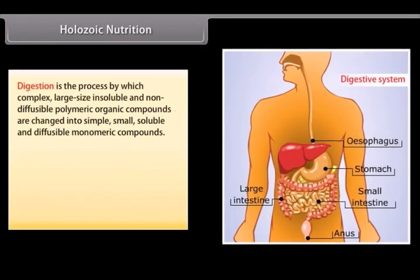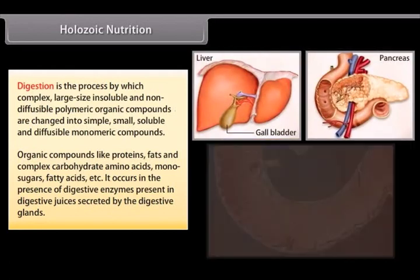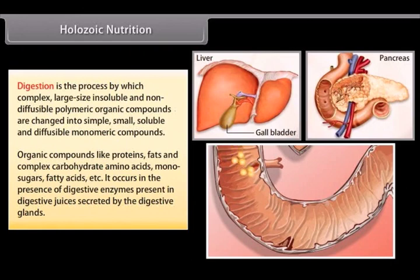Digestion is the process by which complex, large-size, insoluble and non-diffusible polymeric organic compounds are changed into simple, small, soluble and diffusible monomeric compounds. Organic compounds like proteins, fats and complex carbohydrates are broken down into amino acids, monosugars and fatty acids. It occurs in the presence of digestive enzymes present in digestive juices secreted by the digestive glands.